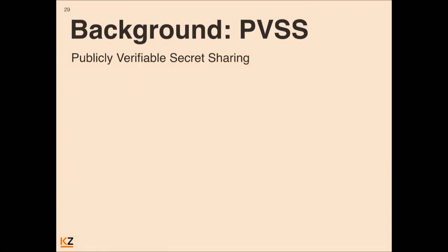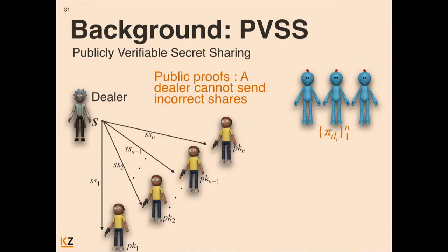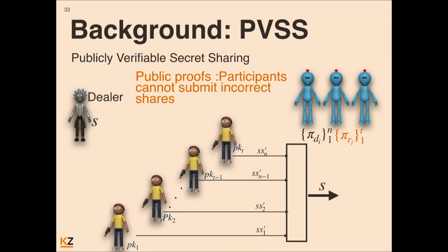Before explaining T-Move, I need to give some background. The first concept is publicly verifiable secret sharing (PVSS). We have a dealer with a secret S who wants to distribute it into N secret shares to N parties. What's also nice about PVSS is that the dealer can provide a public proof that this is actually a correct secret sharing. At a later point, if we want reconstruction, we need T out of N parties to publish their secret shares and then reconstruct the secret S. This reconstruction phase is also publicly verifiable, such that each party can prove that his secret share belongs to this secret.